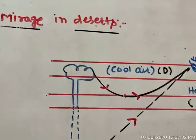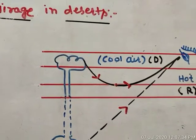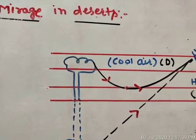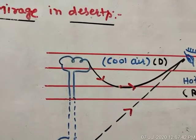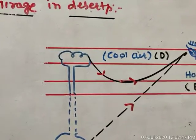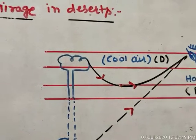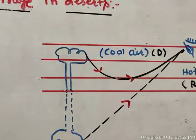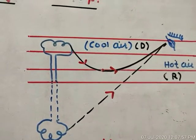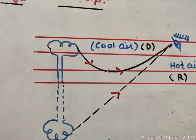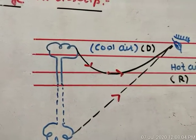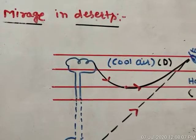Total internal reflection: when a light ray comes from a denser medium and enters into a rarer medium, if the angle of incidence is more than the critical angle, then this light ray will return back in the same medium. This phenomenon is known as total internal reflection. The required conditions are: the light ray should come from a denser medium to a rarer medium, and the angle of incidence must be more than the critical angle.